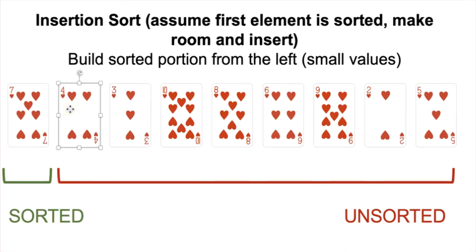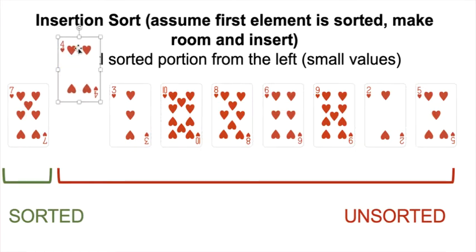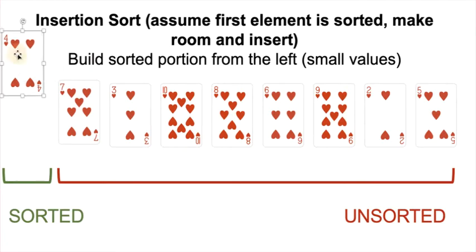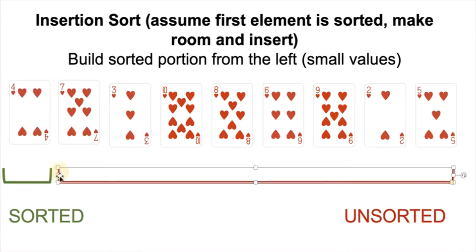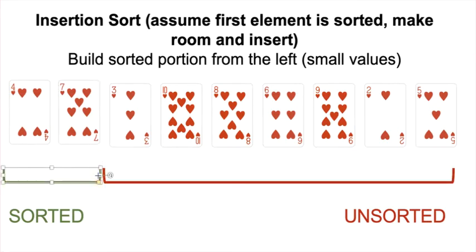Four is the first element in our unsorted portion, so four is the element we're trying to insert. We ask: is four smaller than seven? Yes it is. So we've got to make room to insert the four by sliding the seven over. We're now at the beginning of the array, so there are no other cards to check, and we insert the four in its sorted position. This shrinks the unsorted portion by one and grows the sorted portion by one — that was the first iteration of insertion sort.